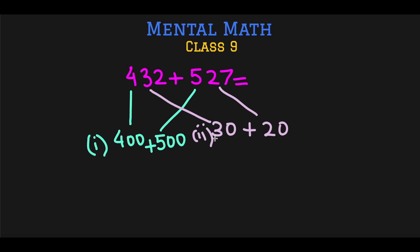And last but not the least, 432 has 2 ones and 527 has 7 ones. So this is the third part of our trick. So in our brain we are splitting the question into three easier addition sums: adding the hundreds separately, adding the tens separately, and adding the ones separately.